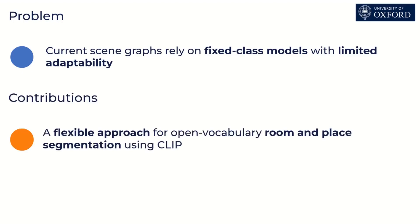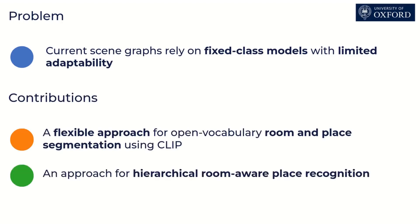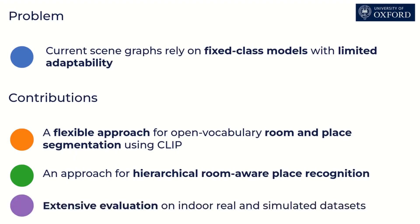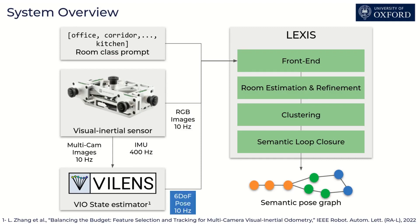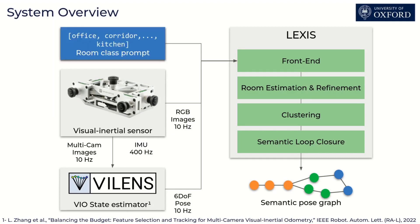Our contributions are a flexible approach for room-and-place segmentation, which we exploit for hierarchical room-aware place recognition. We finally present extensive evaluation of our system. We receive as input a stream of wide field-of-view RGB images and a high-frequency odometry derived from a multicam input, as well as a potential list of room classes.